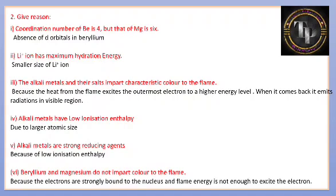Beryllium and magnesium do not impart color to the flame. This is because their electrons are strongly bound to the nucleus and the flame energy is not enough to excite the electron to a higher energy level. Since the electron does not go to an excited state, it does not return to ground state and no energy is liberated, so no color is observed.